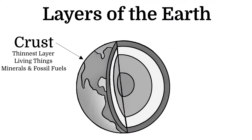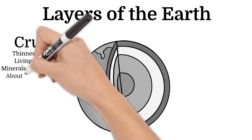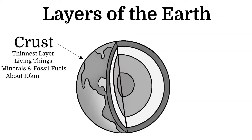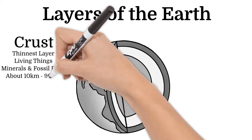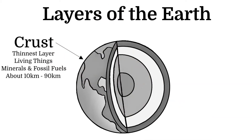The crust is thinnest under the ocean and can be as thin as 10 kilometers. Yet with mountains, the crust can be as thick as 90 kilometers.